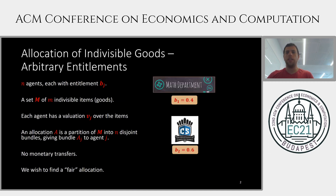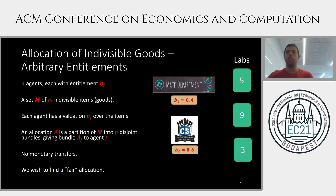To illustrate the setting, consider the scenario of partitioning labs between two departments: the math department and the computer science department. The computer science department is bigger and is entitled to 60% of the labs, while the math department is only entitled to 40%. We have three labs to allocate, of sizes 5, 9, and 3. The value of each lab is its size for both departments, but in general, agents might have different values for each lab.